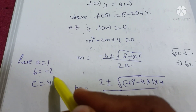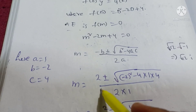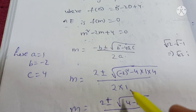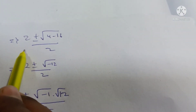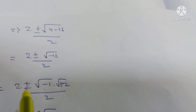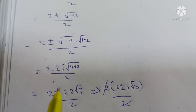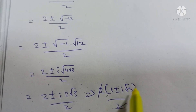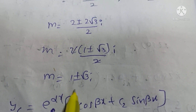Here a is equal to 1 (coefficient of m squared), b is equal to minus 2, and constant c is equal to 4. So m equals 2 plus or minus root of 4 minus 16 all over 2, giving 2 plus or minus root of minus 12 over 2, which is 2 plus or minus 2i root 3 over 2, giving m equals 1 plus or minus i root 3. These are two complex roots.